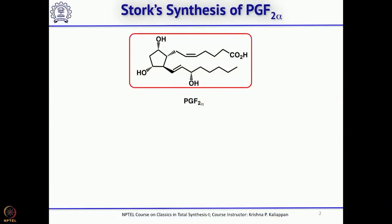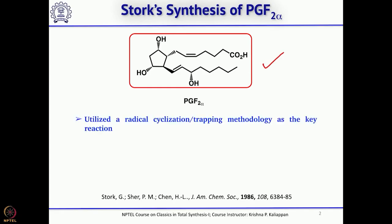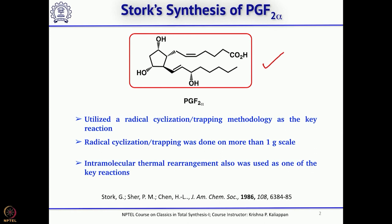First, let us start with Stork's synthesis of PGF2α. The key reactions which Professor Stork used in the synthesis are a radical cyclization to form the 5-membered ring, followed by trapping the 5-exo radical. This radical cyclization, followed by formation of another radical which is trapped by an acceptor, was the key reaction. This could also be done on a 1-gram scale. The next key reaction was an intramolecular thermal rearrangement, also known as Brooks rearrangement.